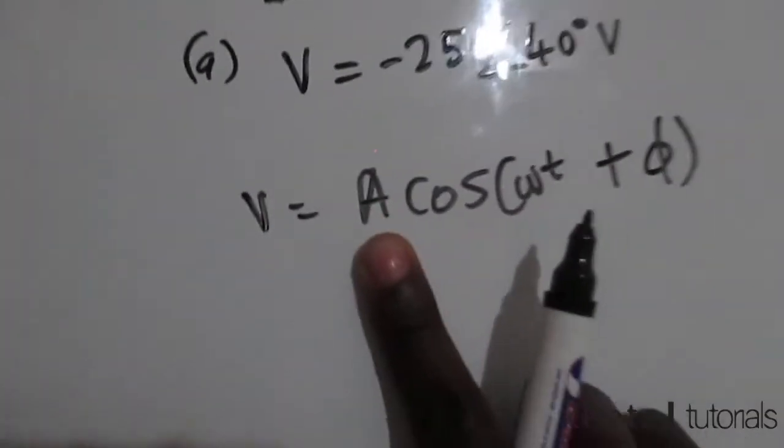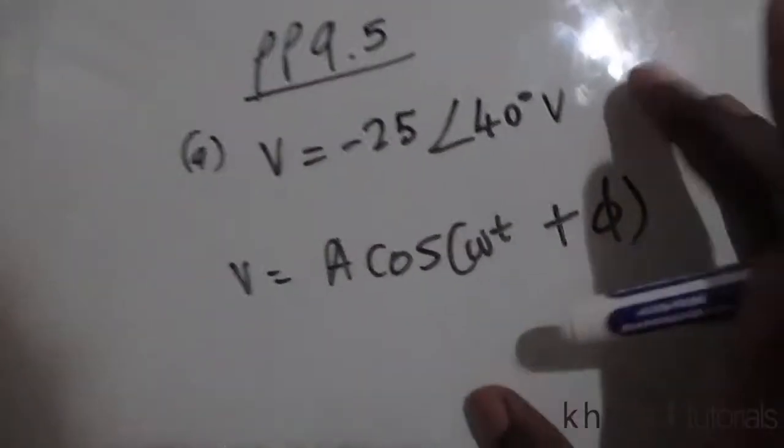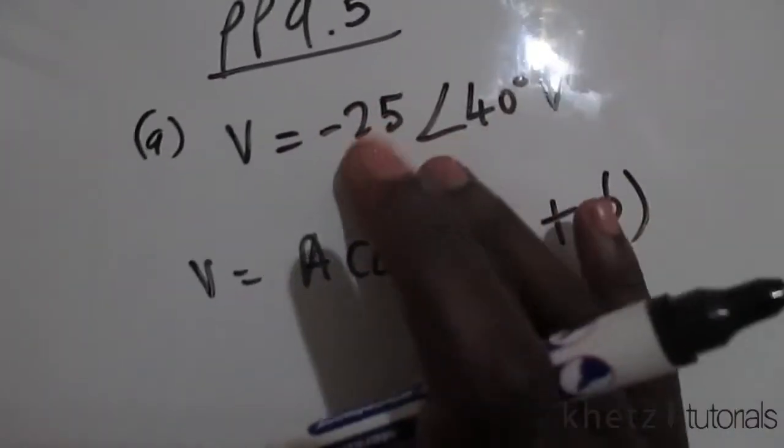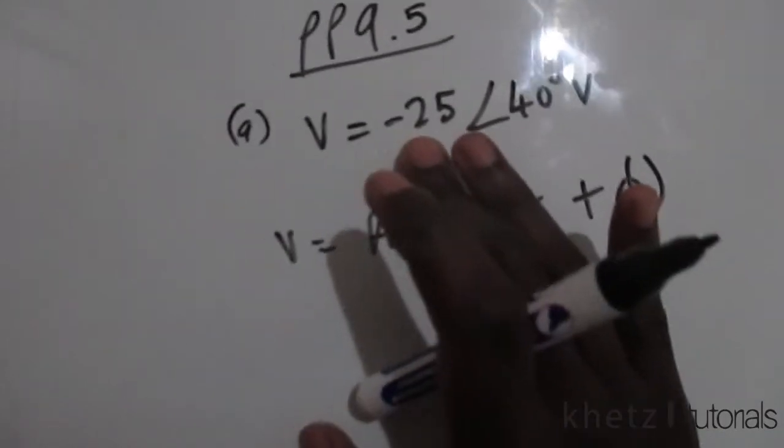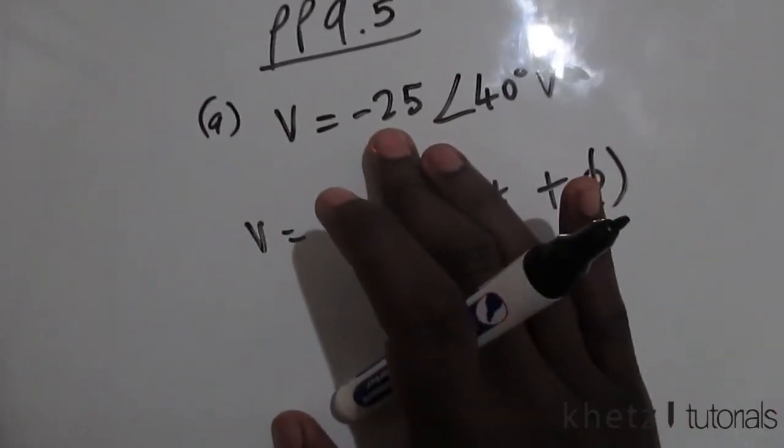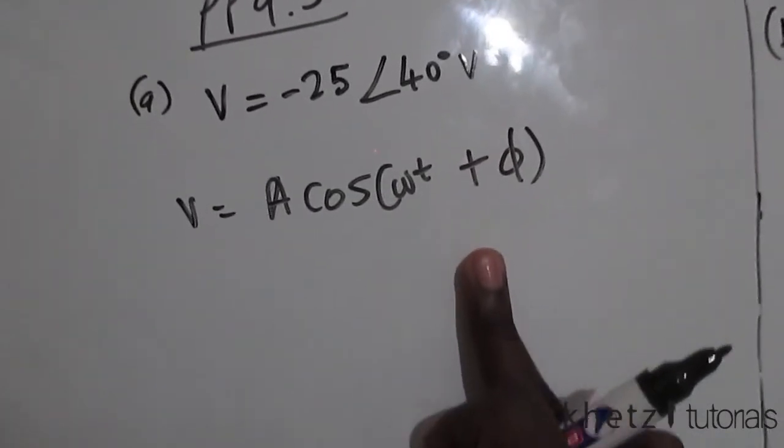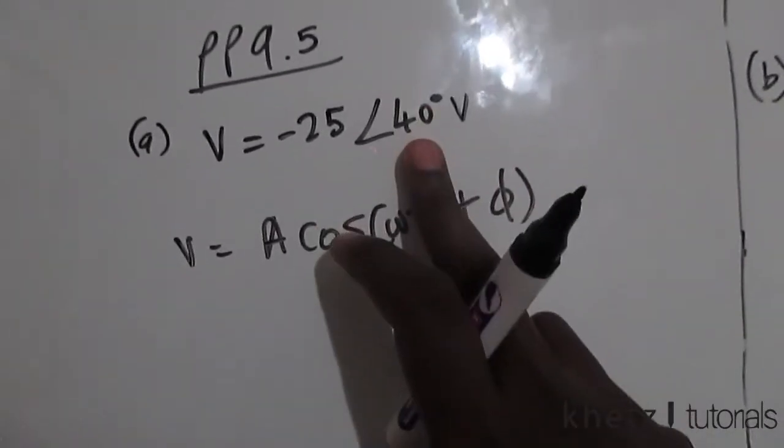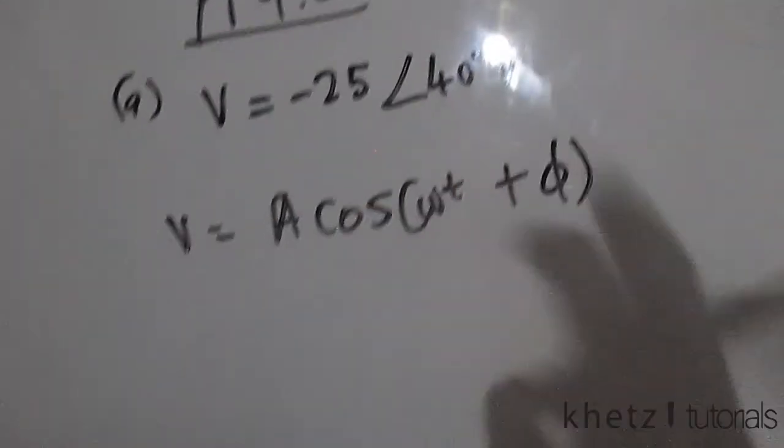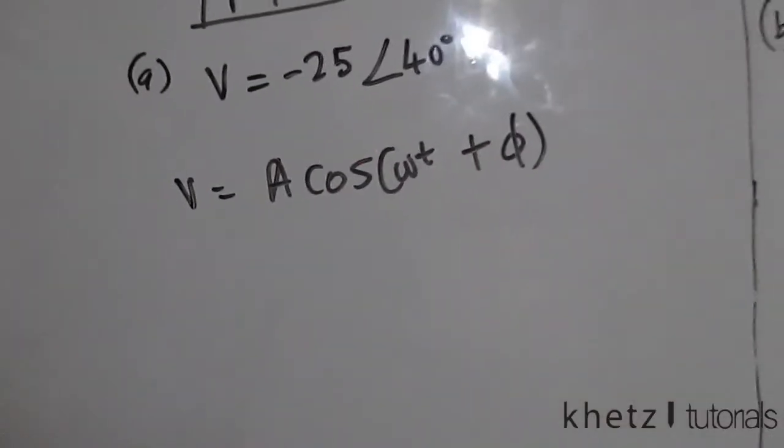What you want to do is to transform this into a positive amplitude, and to do that you basically just add or subtract 180 degrees from this given angle.